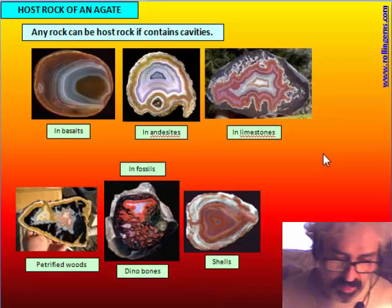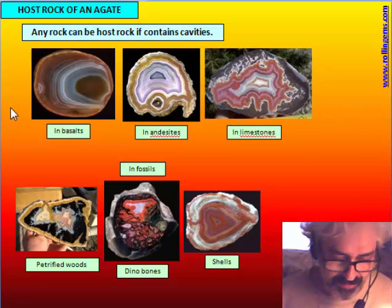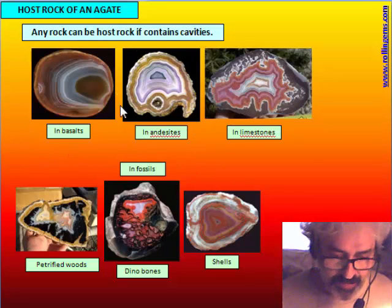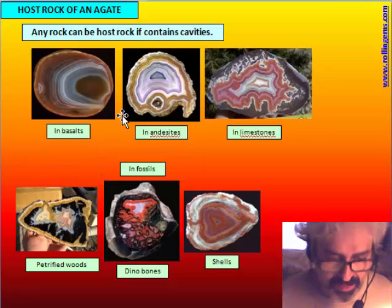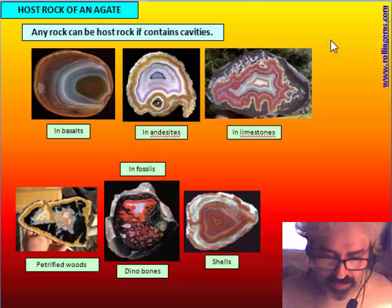What is the host rock of a banded agate? Where do they grow and where are they found? Actually, any rock can be a host rock for an agate if there is a cavity. The most common agates are in basalt and sometimes in intermediate lava like andesite, but basalt is more commonly found with big vesicles, big cavities, which is why it is the most important host rock.